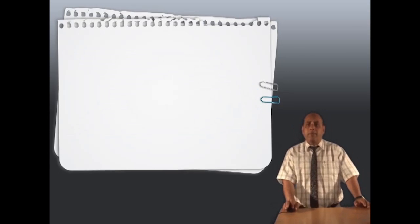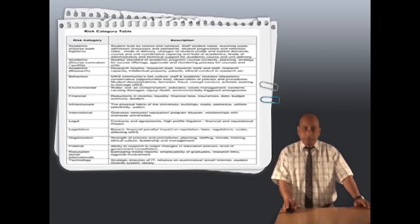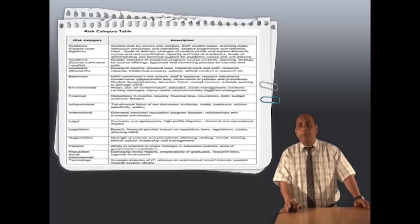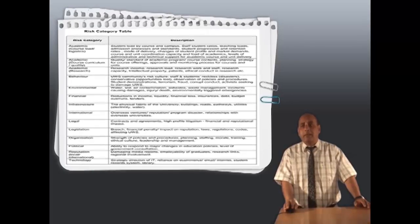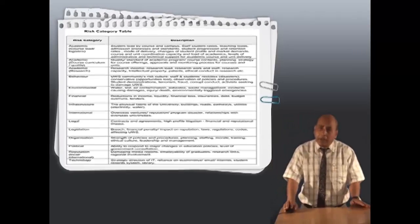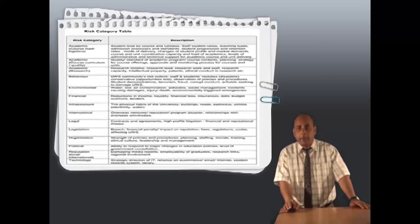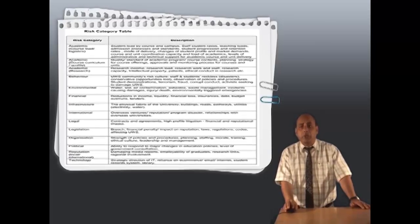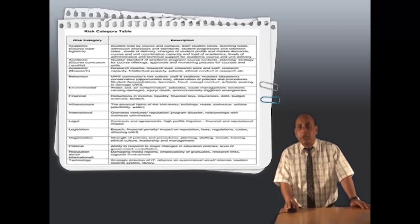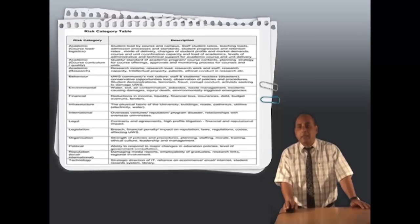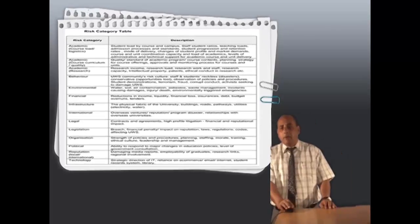This is an example of risk categories. Here is a risk category and a description of the risks that could be encountered under this category. For academic: student load, research and curriculum, the quality and standard of academic programs.